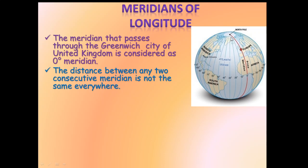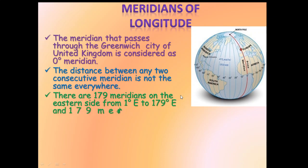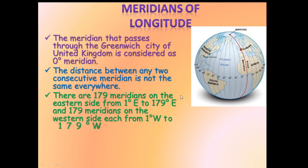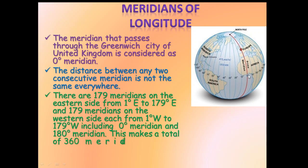There are 179 meridians on the eastern side — from 0 degree, that is 1 degree, 2 degree, 3 degree, likewise till 179 degrees. Again on the western side, from 0 degree towards here, 1 degree, 2 degree, 3 degree till 179 degrees. So 179 on the east, 179 on the west, plus 0 degree prime meridian and 180 degree meridian — it makes a total of 360 meridians on the earth.